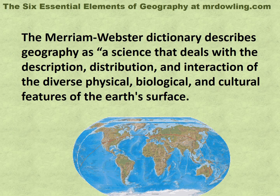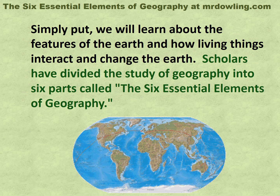The Merriam-Webster Dictionary describes geography as a science that deals with the description, distribution, and interaction of the diverse physical, biological, and cultural features of the Earth's surface. Simply put, we will learn about the features of the Earth and how living things interact and change the Earth.